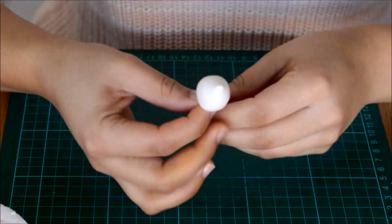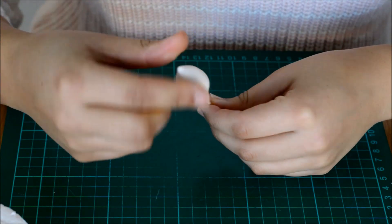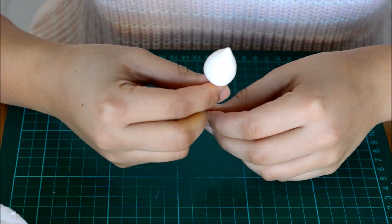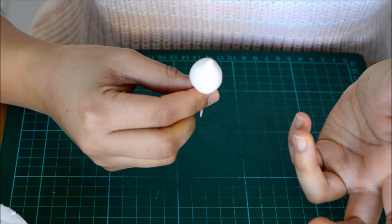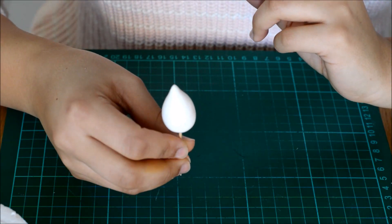To make this rose, you're going to want to start off with this center bud. You can either buy these from local craft stores made from polystyrene, or you can make your own out of gum paste.